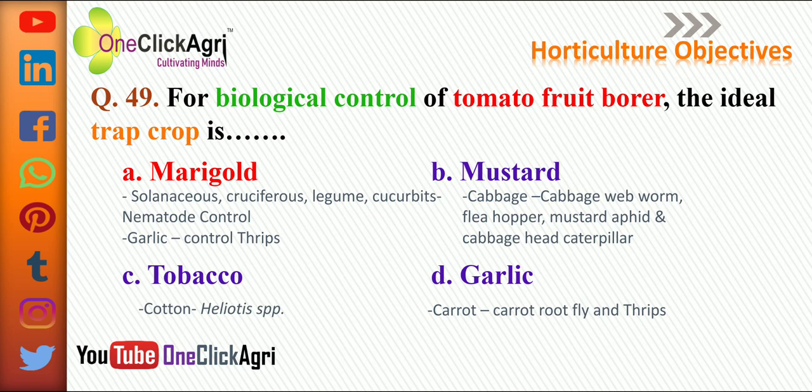In cabbage, mustard is used as a trap crop for cabbage webworm, flea hopper, mustard aphid, and cabbage head caterpillar. In cotton, tobacco is used as a trap crop for Helicoverpa species. And in carrot, garlic is used as a trap crop for carrot root fly and thrips.